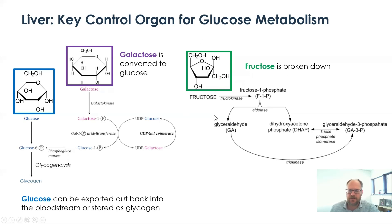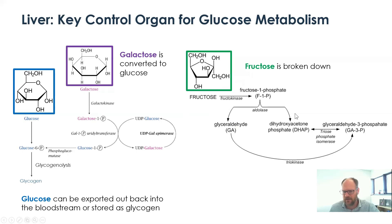Fructose follows a somewhat different pathway. Fructokinase places a phosphate on it, making fructose-1-phosphate. Then aldolase — the same enzyme found in glycolysis — cleaves it into dihydroxyacetone phosphate and glyceraldehyde. Since glyceraldehyde does not have a phosphate on it, triose kinase must phosphorylate it, ultimately making glyceraldehyde-3-phosphate so it can enter glycolysis.